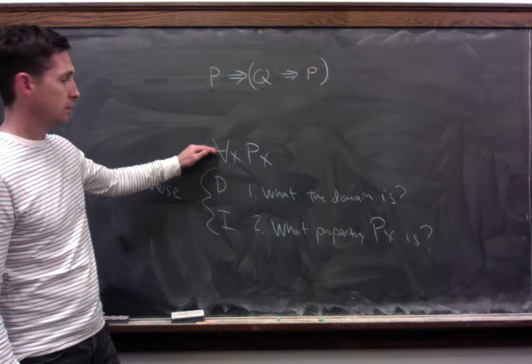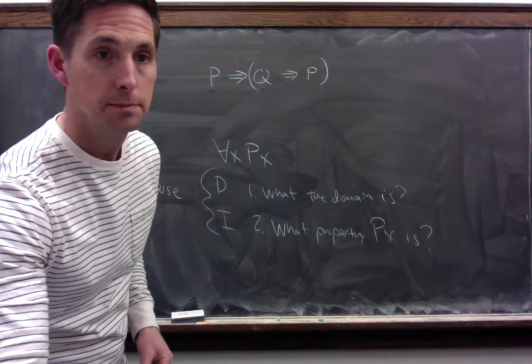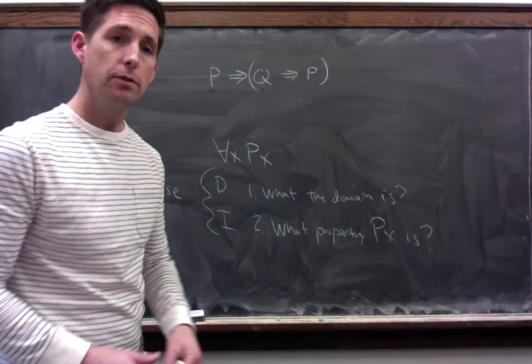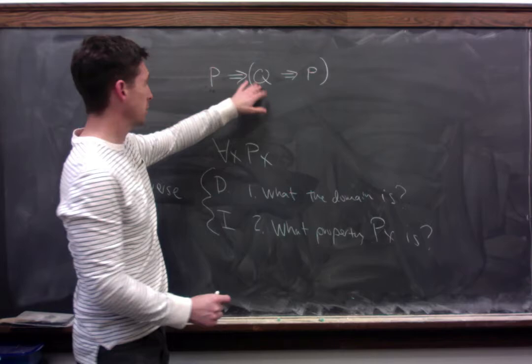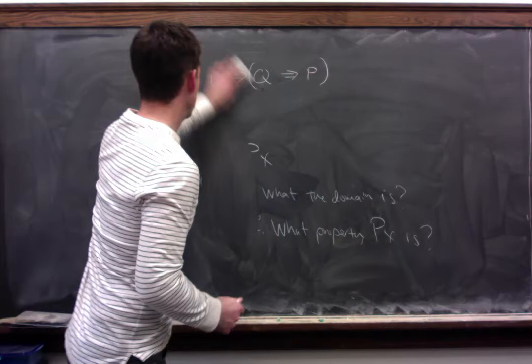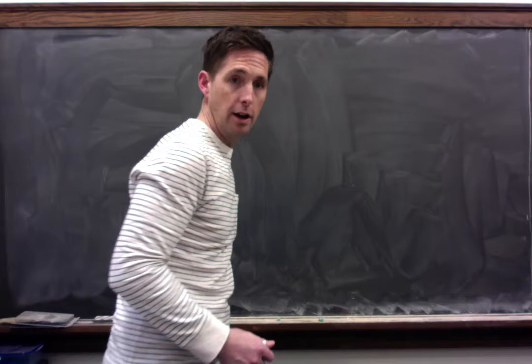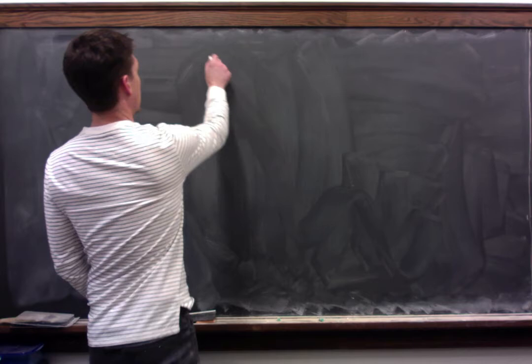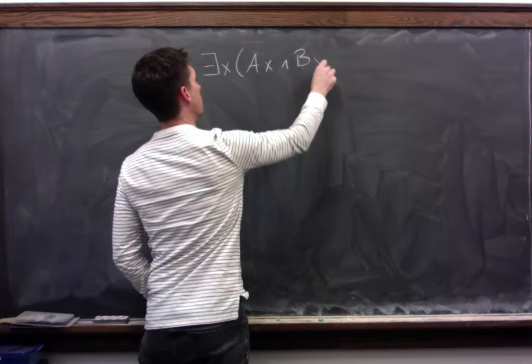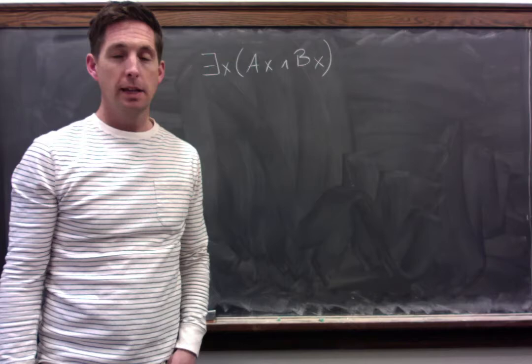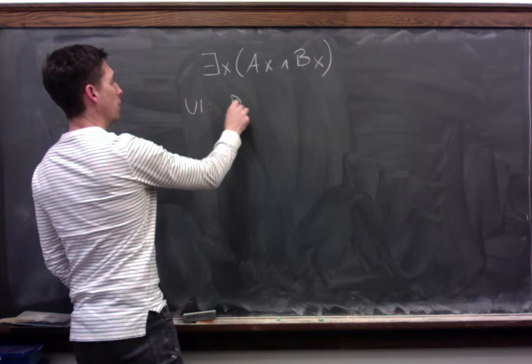So, relative to certain universes this formula is true, and relative to certain other universes that formula is false. Let's work through some examples of how changing the universe might change the truth value of a predicate formula, in a similar way that changing the truth values of P and Q might change the truth value of a sentential formula. Let's start with the example on the slides — I'm on slide number 4. Let's take the formula: there is an x such that Ax and Bx. So that says something like 'some A is B.'